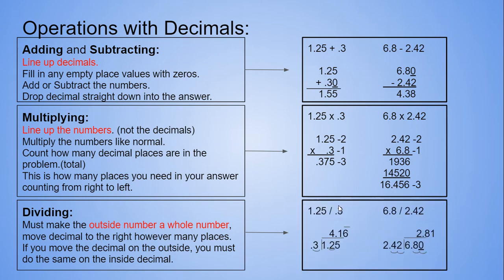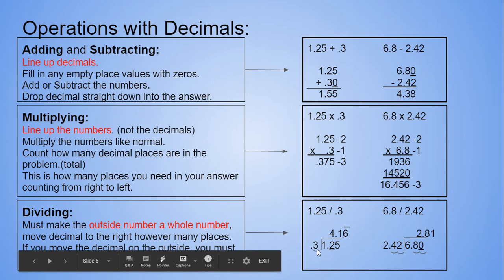For dividing, you must make the outside number a whole number. So no matter how many times you move the decimal to the right to make it a whole number, if you move it on the outside, you must do the same number of moves on the inside. So since I moved it once here, I have to move it once on the inside. On this one, we moved it twice, so I have to move it twice here.